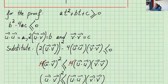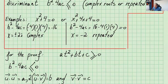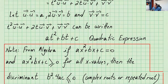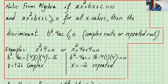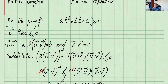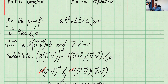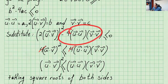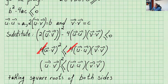Continuing the proof: we showed that the norm of w squared is always non-negative, so b² − 4ac will be less than or equal to 0. We know that u dot u was a, 2(u dot v) is b, and v dot v was c. If we substitute, we have (2·u dot v)² minus 4·(u dot u)·(v dot v) less than or equal to 0. Taking that to the other side, we get 4(u dot v)² is less than or equal to 4·(u dot u)·(v dot v). We can cancel the fours, so we're left with (u dot v)² ≤ (u dot u)·(v dot v).